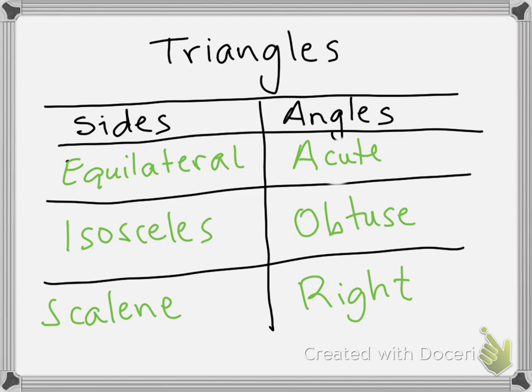So when you complete the template, the section about triangles — a polygon with three sides — triangles can have two names. One name is going to be based on the sides, and the other name, the second name or the last name as I call it, is going to be based on the angles. So two names: one based on the sides, the other one based on the angles.